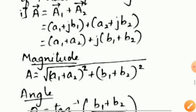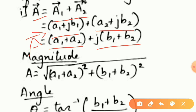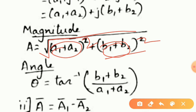For the addition of two phasor quantities, a1 plus a2 equals vector a. Substituting the values: a1 plus Jb1 plus a2 plus Jb2. Separating real and imaginary parts, we get a1 plus a2 plus J(b1 plus b2). The magnitude is root over (real part squared plus imaginary part squared), and the angle is theta equals tan inverse of imaginary part upon real part.